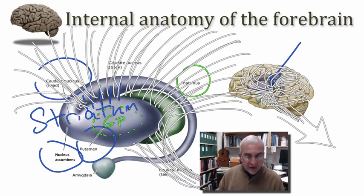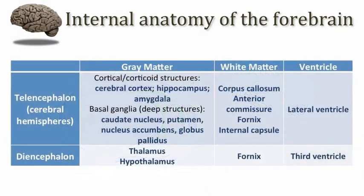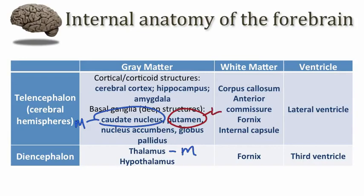Our focus is primarily on the basal ganglia and the thalamus. On the medial side of the internal capsule, we would expect to find the thalamus and the caudate nucleus. On the lateral side, we would expect to find the putamen and the globus pallidus. As for the nucleus accumbens, it is really neither medial nor lateral — it is actually inferior to the internal capsule, and you'll see what I mean when we look through sections of the brain.